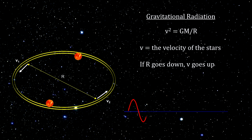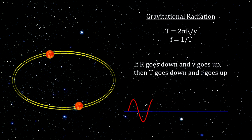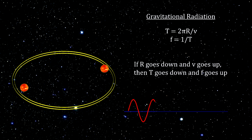This, in turn, increases their velocity. A shorter circumference and faster velocity reduces the time it takes for a full orbit and therefore increases the frequency of rotation and therefore the frequency of the gravitational wave.